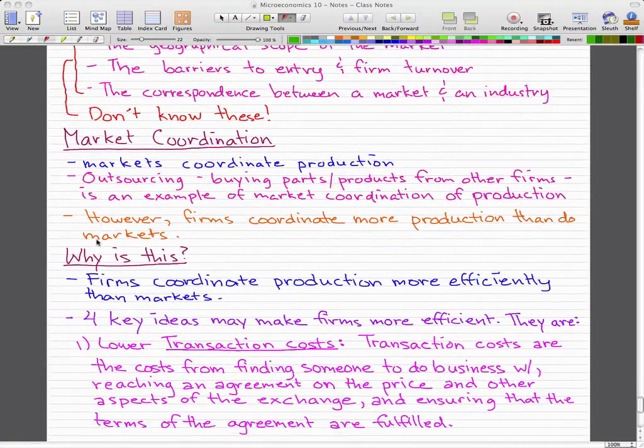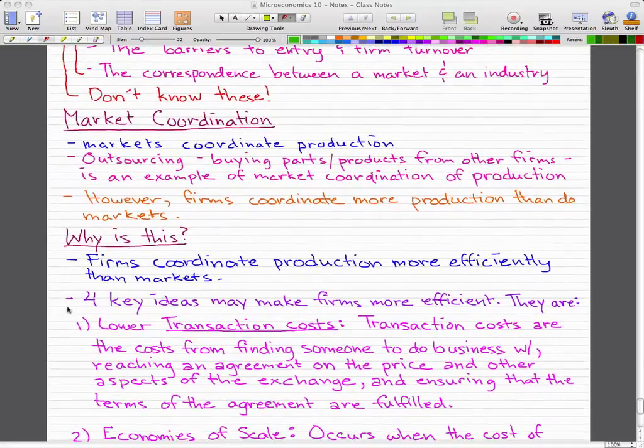So why is it that firms coordinate more production than markets? Well, firms coordinate production more efficiently than markets. We have this huge market—it doesn't know how to coordinate anything. So that is why we leave things to the firms. Firms actually have people running them, and they went through school to learn how to run companies efficiently or run production more efficiently. So this is why firms are coordinating production better than markets.